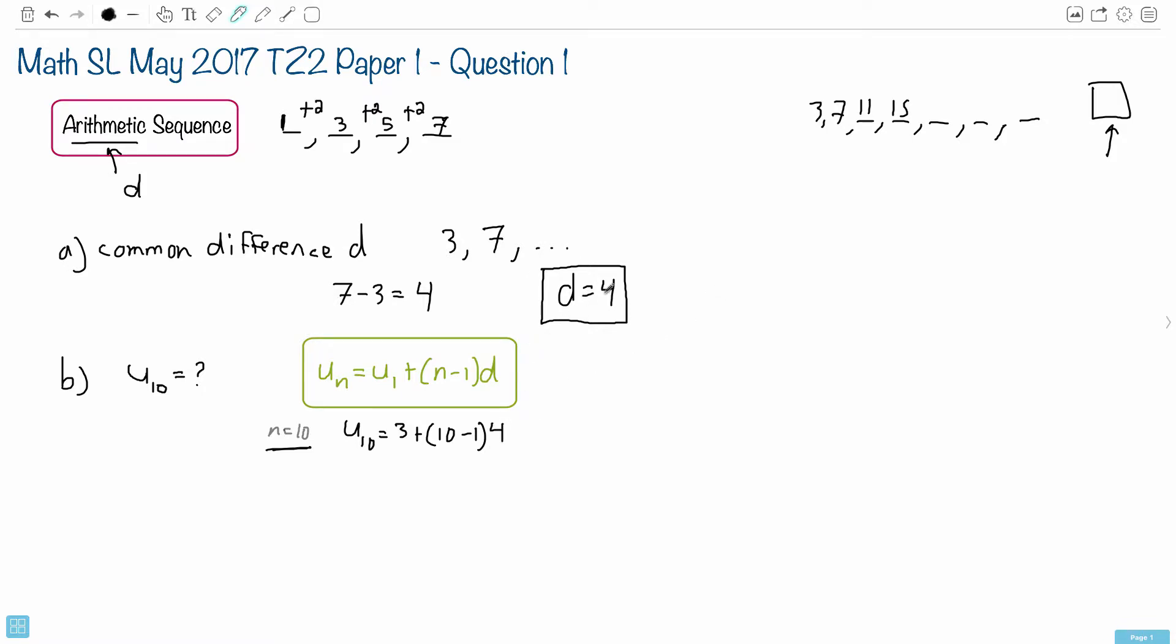Remember, if you got part A wrong and you use it correctly in part B, you can still get full marks. U₁₀ equals 3 plus 10 minus 1 is 9, 9 times 4 is 36. U₁₀ is 3 plus 36, which is 39.